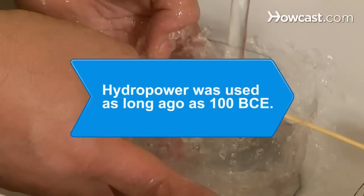Did you know? Hydro Power was used as long ago as 100 BCE when the Greeks and Romans placed vertical water wheels in streams or rivers to grind wheat and corn.